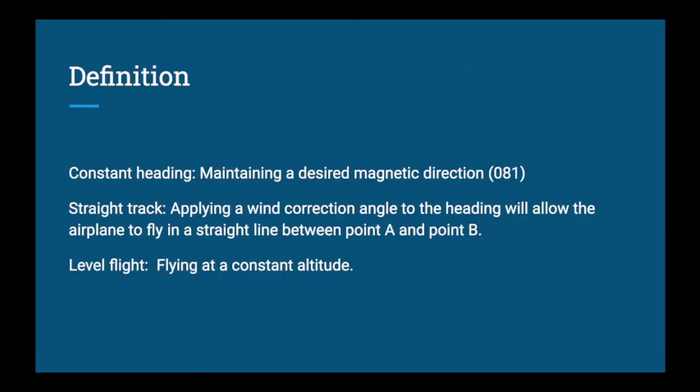Definitions for today: a constant heading is maintaining a desired magnetic direction, such as 081 degrees. A straight track involves applying a wind correction angle to a heading to allow the airplane to fly in a straight line between point A and point B — this is necessary any time you're flying with a crosswind, as it will try to blow you off track. Level flight refers to flying at a constant altitude, such as maintaining 4,500 feet.